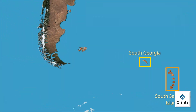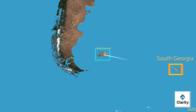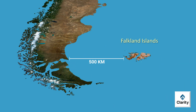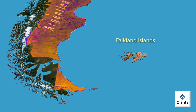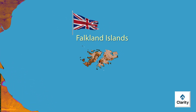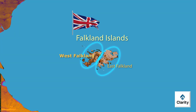Another island nearby in the Atlantic is Falkland Islands. They are situated to the west of South Georgia Islands and lie about 500 kilometers east of Argentina's coast. These islands are also a part of British overseas territory. They consist of two main islands called East Falkland and West Falkland, and around these main islands there are hundreds of smaller islands.